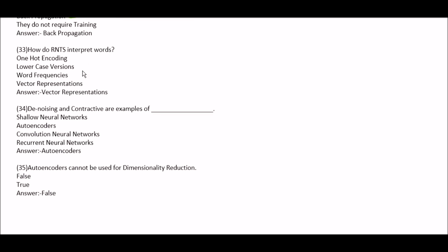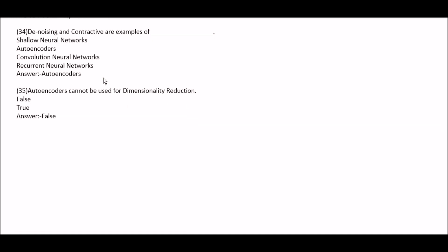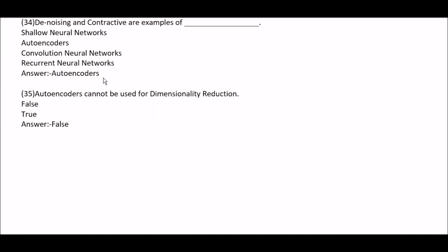How do RNNs interpret words? Option A: one-hot encoding. Option B: lowercase versions. Option C: void frequencies. Option D: vector representations. Right answer is option D, vector representations. Next question: denoising and contractive are examples of — option A: shallow neural network. Option B: autoencoders. Option C: convolution neural networks. Option D: recurrent neural network. Right answer is option B, autoencoders.